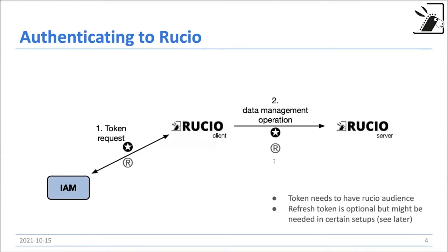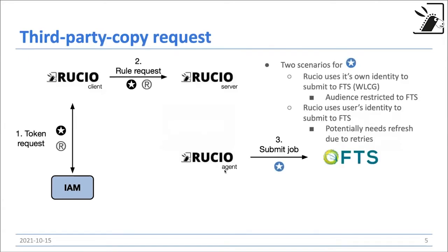If you look at the simple authentication workflow to Rucio, it's quite a simple workflow. The Rucio client requests a token from the identity provider. Potentially it also requests a refresh token — I will explain this a little bit later, but this might be needed; it's optional. And then a Rucio client just does commands to the Rucio server with this authentication token. It simply needs to have Rucio audience, and that's all we ask for.